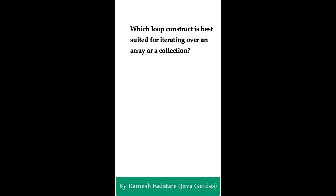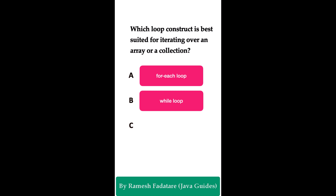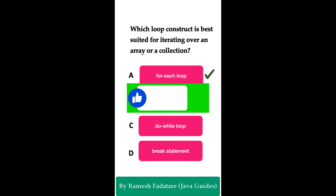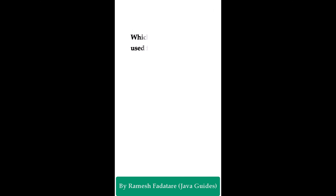Which loop construct is best suited for iterating over an array or a collection? Option A: for-each loop. Option B: while loop. Option C: do-while loop. Option D: break statement. The correct answer is for-each loop, also called the enhanced for loop. It is best suited for iterating over an array or collection in Java. It simplifies the syntax for iterating through each element without needing an index or iterator explicitly.